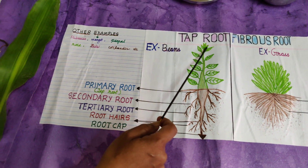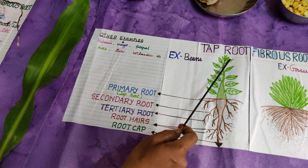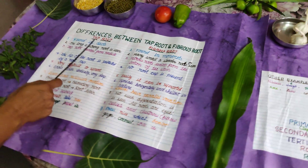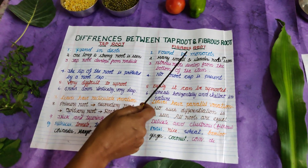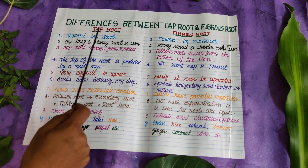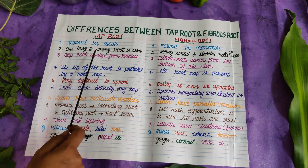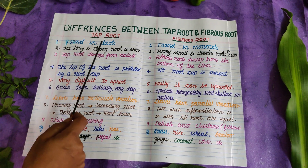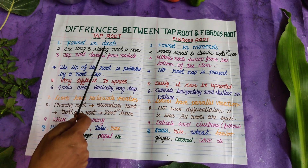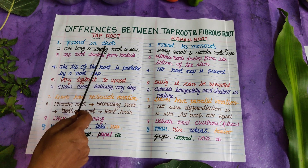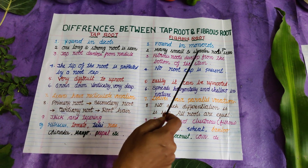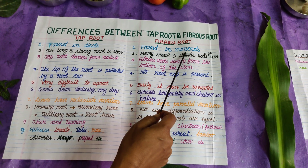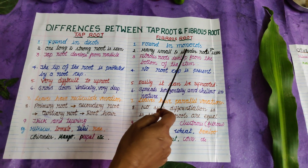Now let us find the differences between the tap root and the fibrous root system. The tap root is mostly found in dicots, whereas the fibrous roots are found in monocots.